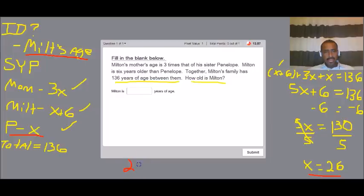So now we have to do 26 plus six years, which is going to give us 32 years. And then that is Milton's age.